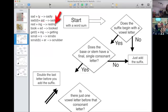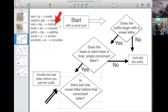But if the answer is yes, we still have one more question. And this is what you're saying: is there just one vowel letter before that consonant letter? It's talking about this consonant letter. So let's take a look at book. Does the suffix begin with a vowel letter in booked? Yes, okay. Does the base or stem have a final single consonant letter? Yes, the K is all by itself. Is there just one vowel letter before that consonant letter? No. How do you spell book? Oh, you guys are awesome.